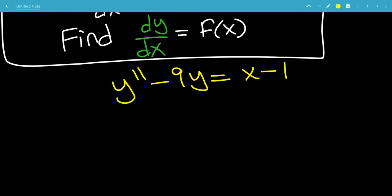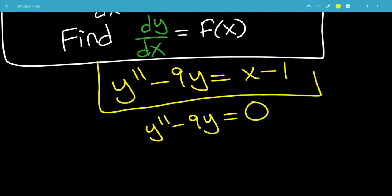So let's suppose the case where y double prime minus 9y equals 0. This is the original equation, and this is the one we're solving right now.